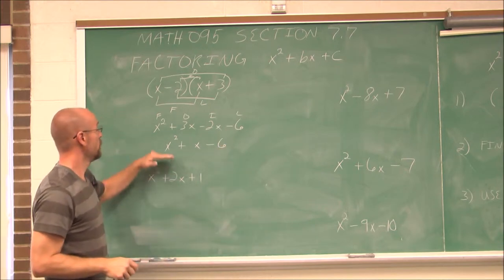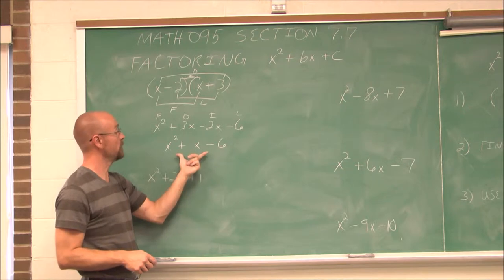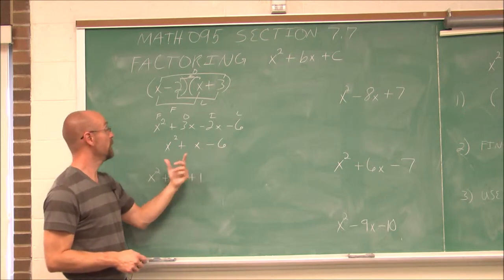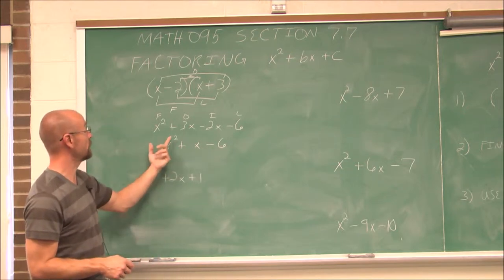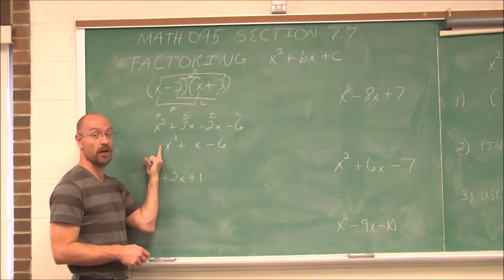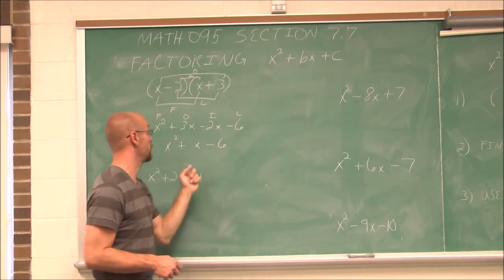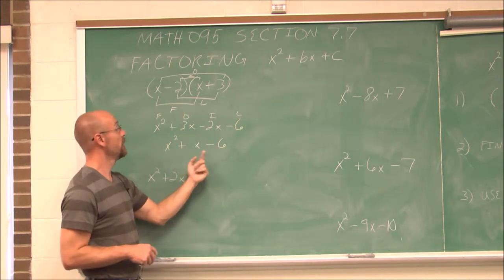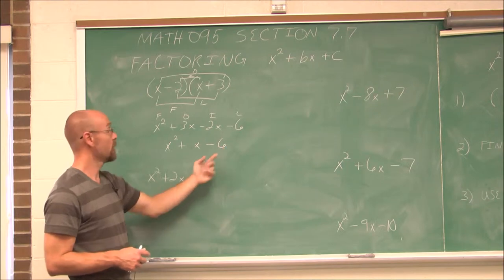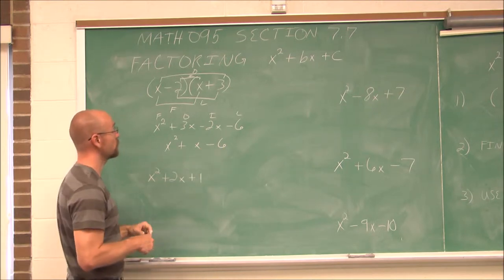These are like terms, so I can combine them: x squared plus 3x minus 2x is just x, minus 6. So when I FOIL this out, I get this three-term polynomial, which we call a trinomial: x squared plus x minus 6. This coefficient is 1, my b value is also 1, and my c value is negative 6.